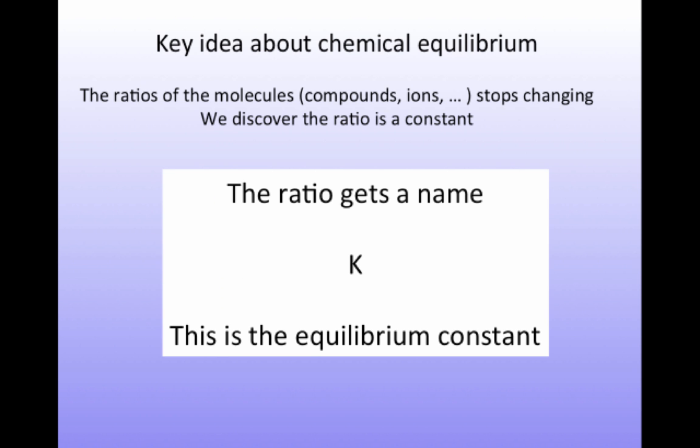So a very key idea is that the ratio of the molecules or compounds or ions stop changing. And that ratio turns out to be a constant. And we give that constant a name. It's given the name K. And it is the equilibrium constant. It is a constant value. That is, it's just a number. It's equal to some amount, 2, 5, 3 times 10 to the minus 42, 8 times 10 to the 13. And it doesn't change. That is, for a given reaction condition, the equilibrium constant is always the same. And thus it's a constant and it's related to equilibrium. It gets the creative name, the equilibrium constant.